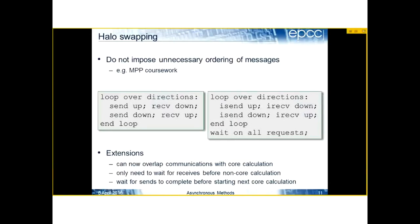A question which always comes up is overlapping communication and calculation. It's a bit like mixing MPI and OpenMP — a lot of people spend a long time putting OpenMP into their MPI code to create a hybrid, and then find it doesn't go any faster. Similarly, overlapping communication and calculation is something you really need to think about. People often put a lot of effort into structuring their code so it appears to overlap, but in practice get no performance benefit.